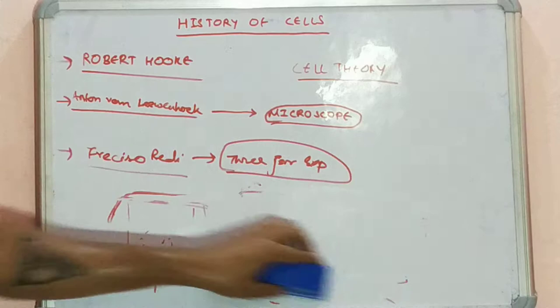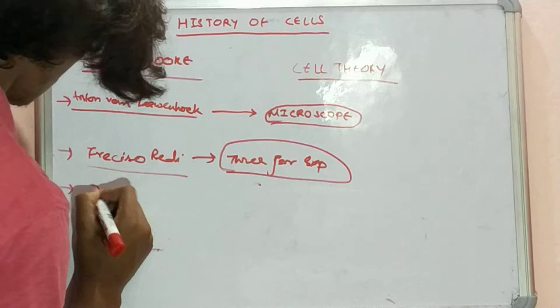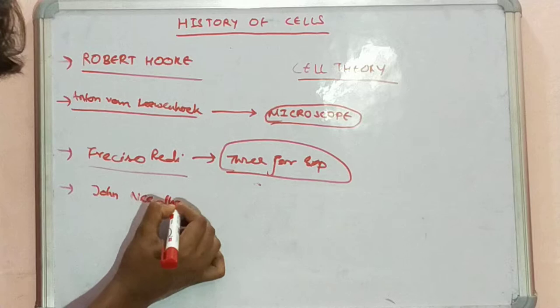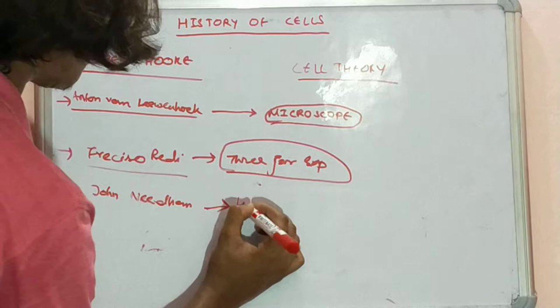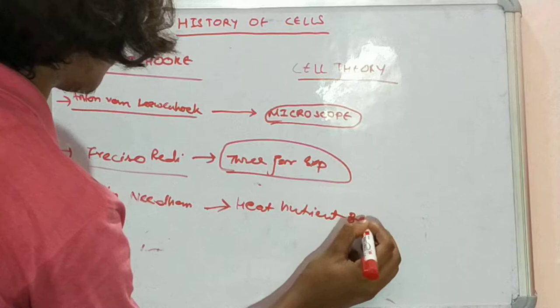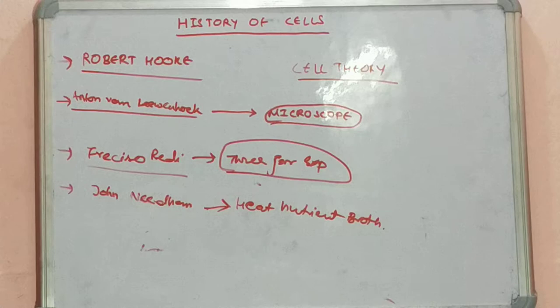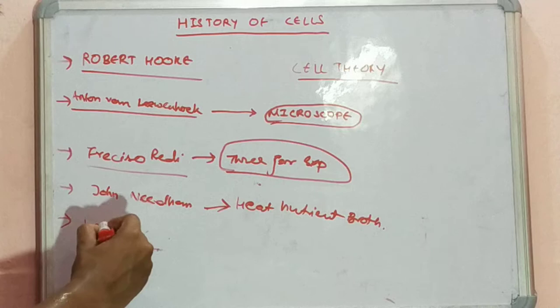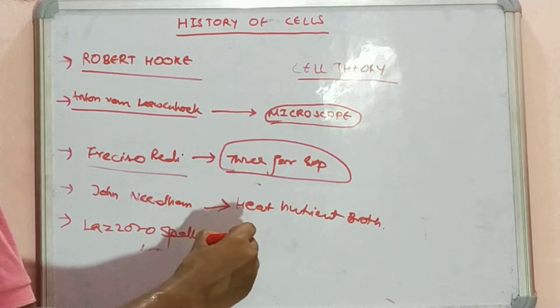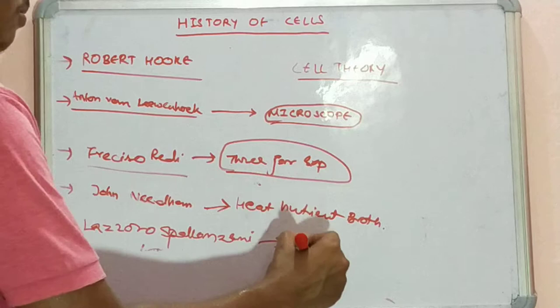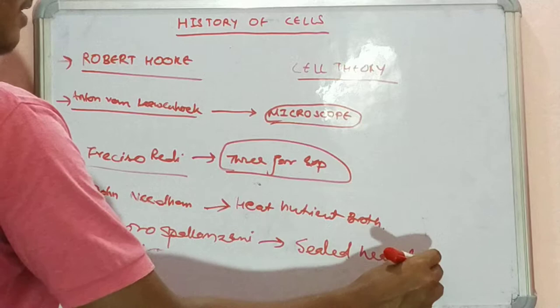The next scientist to mention is John Needham, who introduced the term 'heat nutrient broth.' Heat nutrient broth is a broth created from an inoculum that is heated so that any contamination present is destroyed. The next scientist is Lazaro Spallanzani, who conducted an experiment known as the sealed heated broth experiment, which I'll come to in a bit later in the video.